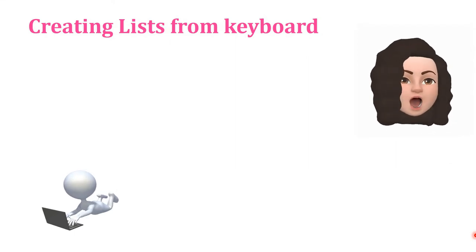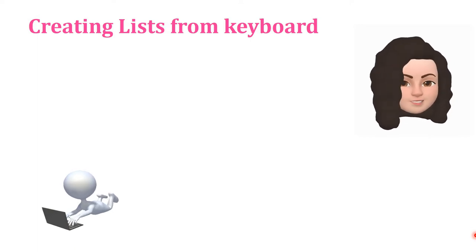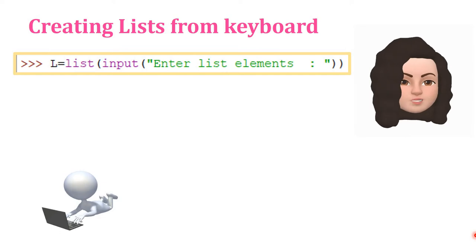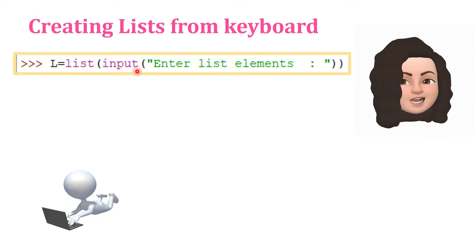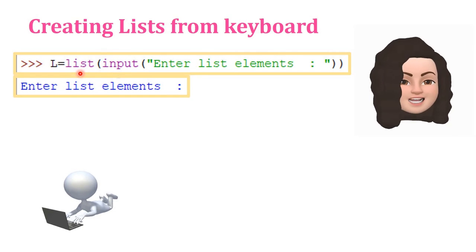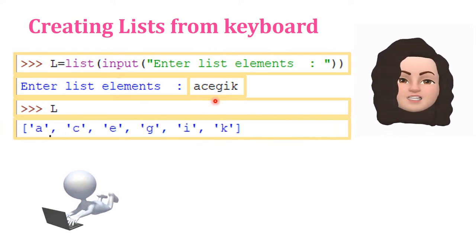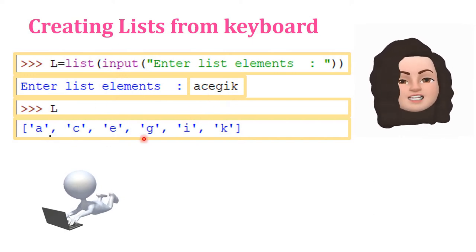Now let's learn how to create a list from keyboard input. The first method is using the list function: L = list(input('Enter list elements')). Whatever input you give, each character will be considered as a single element of the list. For example, if you input 'ACEGIK', then 'A' becomes the first element, 'C' the second element, and so on — each character becomes one element of the list.